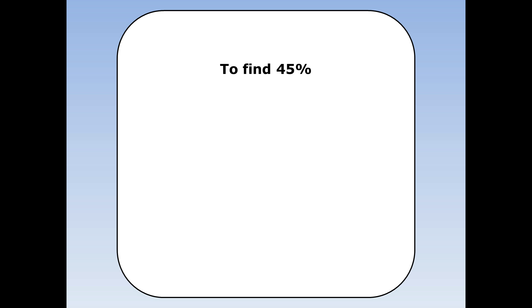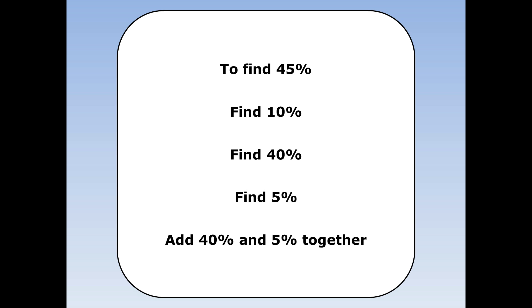To find 45% of something, first find 10%, then find 40%, then find 5%, and then finally add 40% and 5% together.